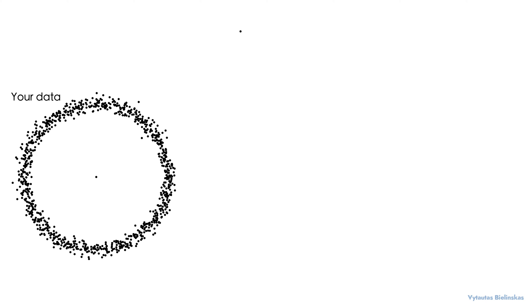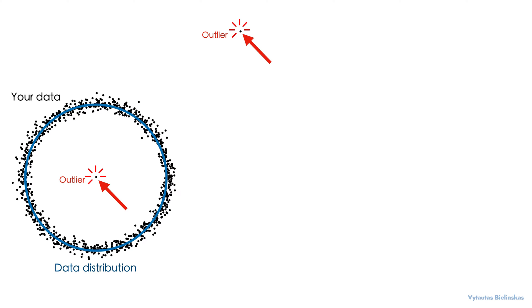Let's say this is your data. It can be any shape data. For this example, I will use circle shape data distribution. Let's say this data has a couple of outliers — outlier number one and outlier number two. That blue line is the dominating data distribution. It is a circle shape data distribution, and 99% of data points are nearby this distribution line.